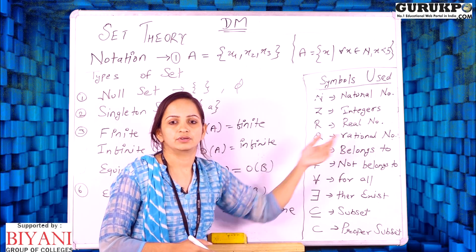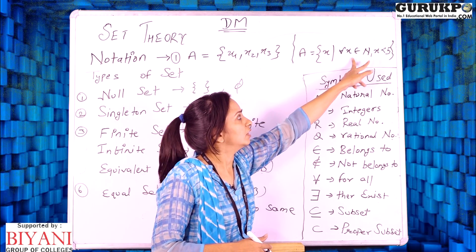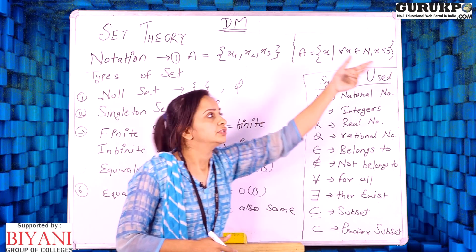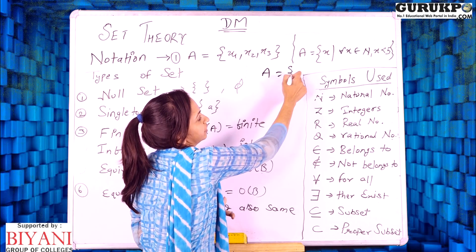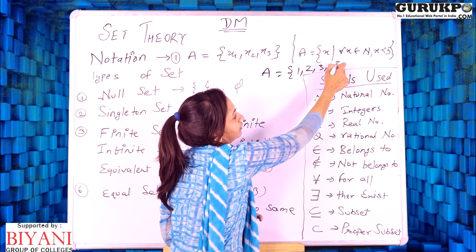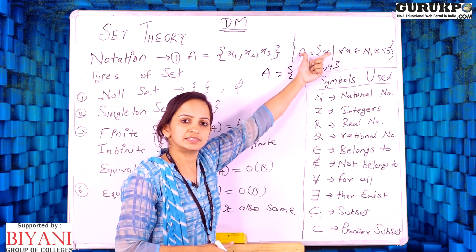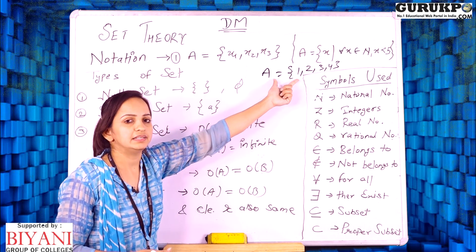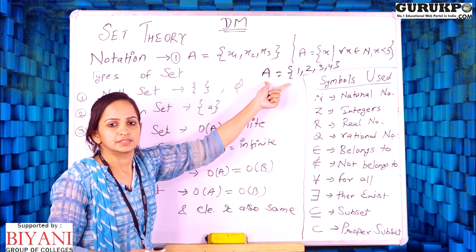So what I defined in my set is: for all x belonging to natural numbers N, x is less than 5. Therefore, in set A I have the natural numbers which are less than 5 — basically the set {1, 2, 3, 4}. I can define it in roster form or in set-builder form; both are valid and exactly the same.